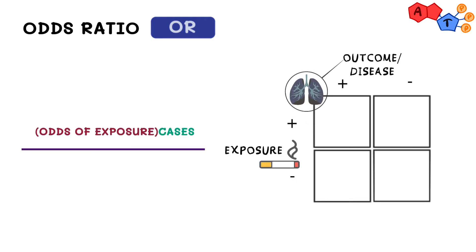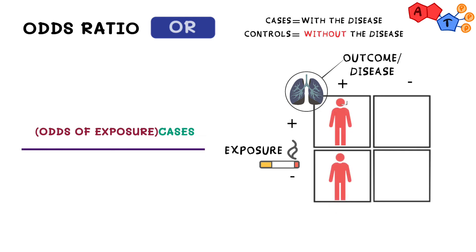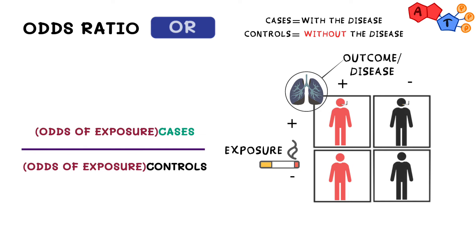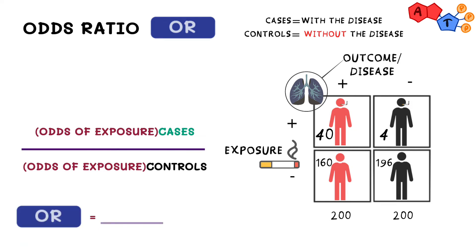On the other side of the spectrum, we have odds ratio, which is a ratio. Its numerator represents all those with the disease broken up into those who are and are not exposed. The denominator is the exact same thing but with those who are healthy. This time, instead of having 200 non-smokers and 200 smokers, suppose we have 200 lung cancer patients and 200 healthy people. Let's imagine 40 of the lung cancer patients reported that they smoke, and only 4 of the healthy persons reported that they smoke. The formula would give us 40 over 160 in the numerator and 4 over 196 in the denominator, which simplifies to roughly 12.25.